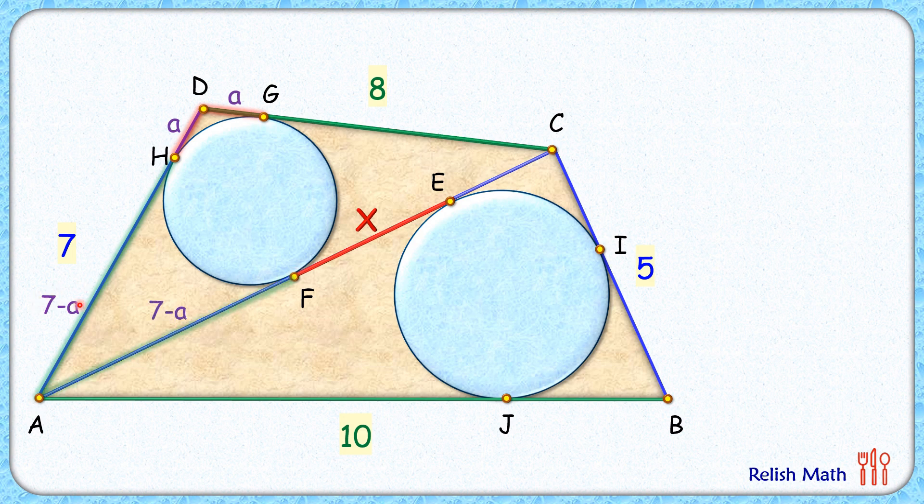Now here the length DC is 8 centimeters, and thus CG length will be 8 minus a centimeters. From external point C, CG and CF are the two tangents which are drawn, so CF length will be the same, 8 minus a centimeters.